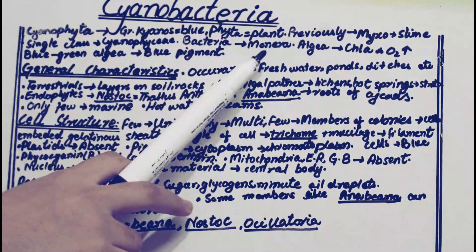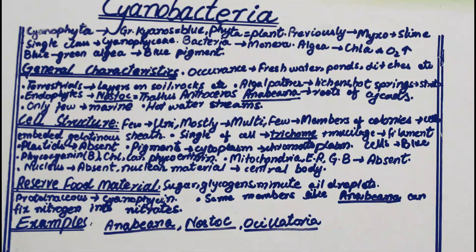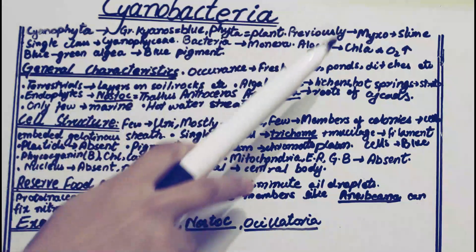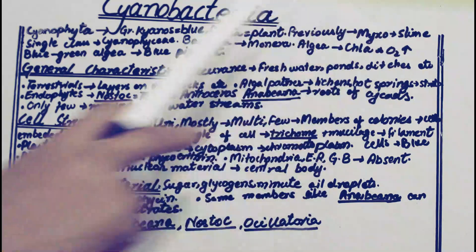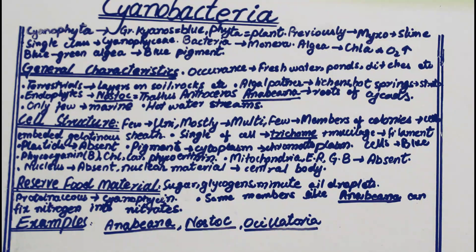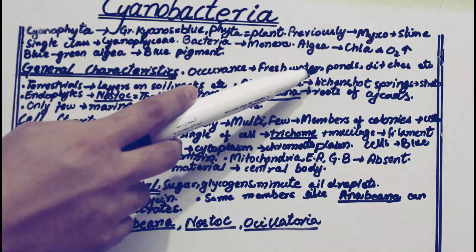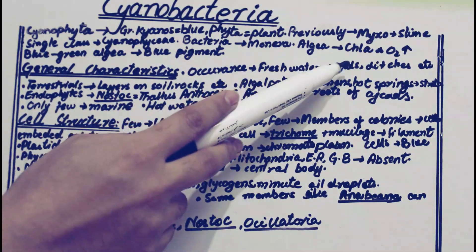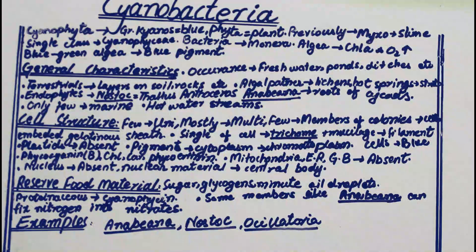They have just one single class which is Cyanophyceae, and they are included in Kingdom Monera because they have many characteristics similar to bacteria. They are also known as blue-green algae because they have chlorophyll-a and release oxygen — these are characteristics of algae since they are photosynthetic.